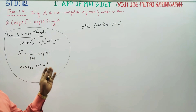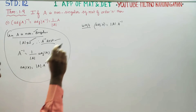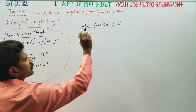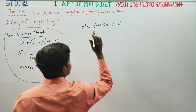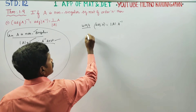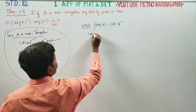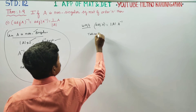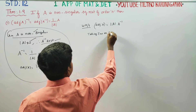I am going to take the inverse on both sides. Since A inverse is not equal to 0, we can proceed with taking the inverse on both sides.